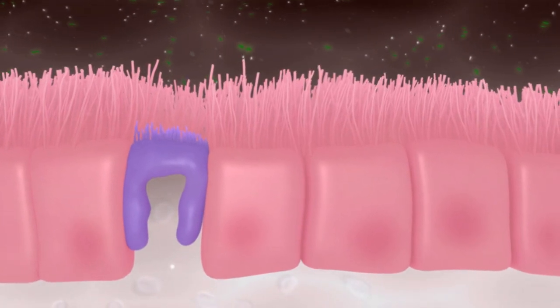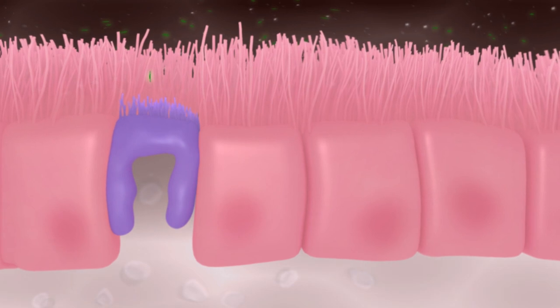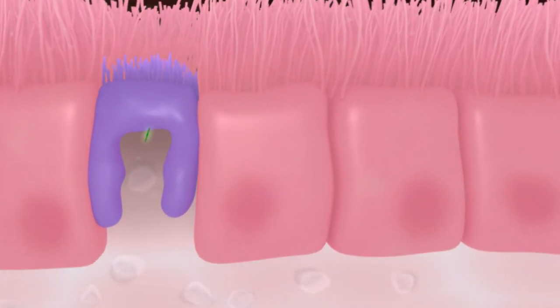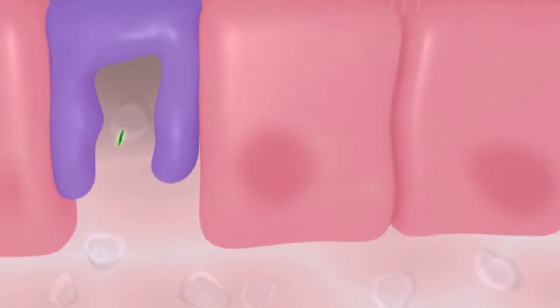Shigella, among other pathogens, exploits the M-cells' ability to transport whole particulates into the basolateral pocket, a specialized environment underlying the follicle-associated epithelium, which enables contact with several immune cells.